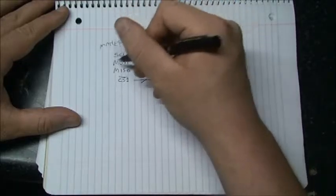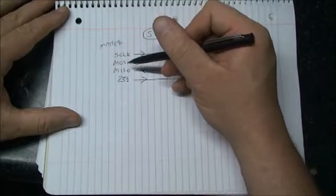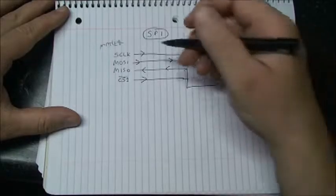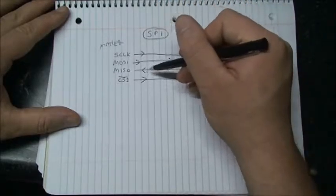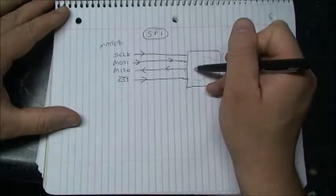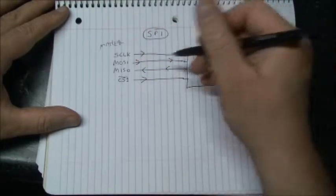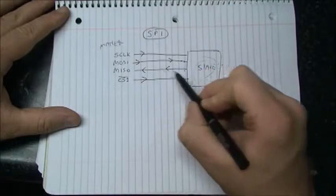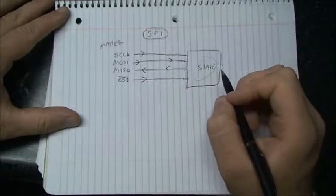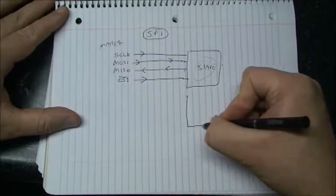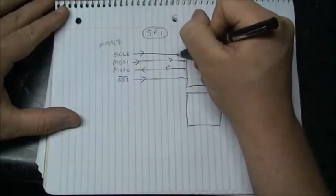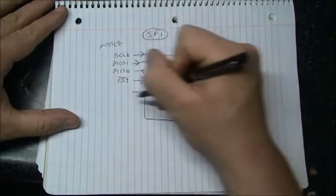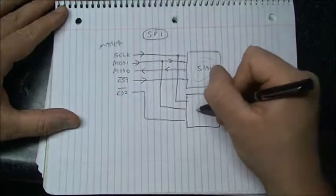Not all devices talk back to the Master. The clock and chip selects, the clock, MOSI, and the chip selects are always driven by the Master. And the Master In, Slave Out is driven by the Slave. The MCP4822 is an example of that. It just takes the clock, the MOSI line, and a chip select line.